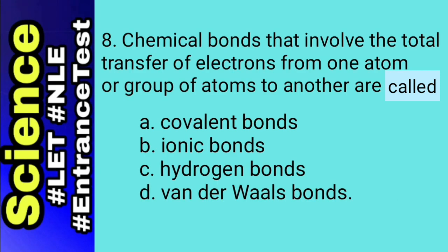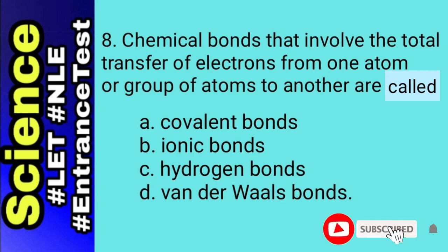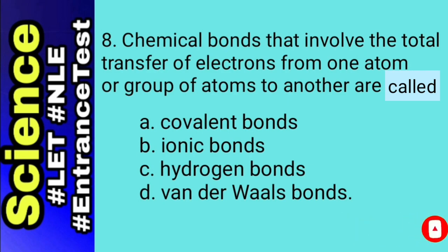Choices A, C, and D for this number all pertain to sharing of electrons. Thus, our answer is letter B, ionic bond. Ionic bond is formed when one or more electrons are transferred from one atom to another.